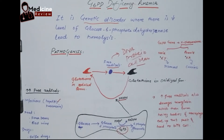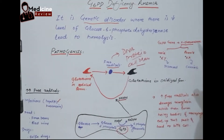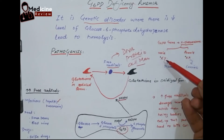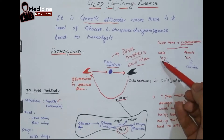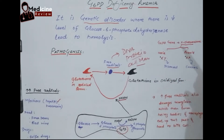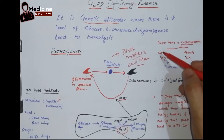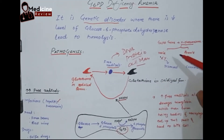First of all we should understand what type of genetic disorder this is. The G6PD gene is present on the X chromosome. If this X chromosome is defective and goes to a male baby, because the male has only one X chromosome, that one defective chromosome will lead to disease. But if one defective X chromosome goes to a female baby, because females have two X chromosomes, one will be defective and the other normal — so female babies are usually carriers. This G6PD deficiency anemia is only seen in male babies while female babies act as carriers.